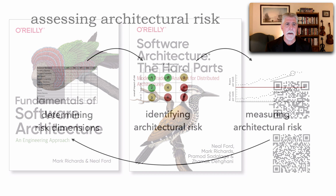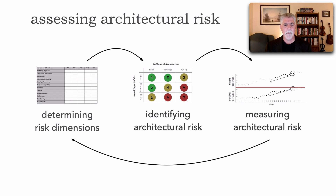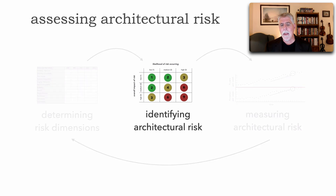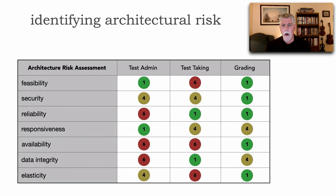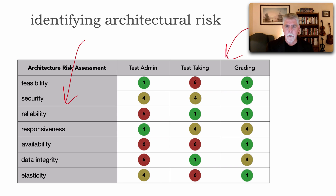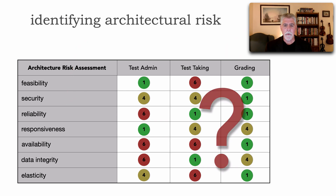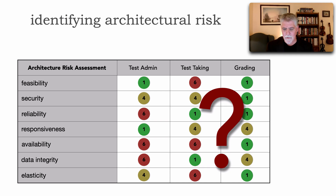In Lesson 127, we took a look at Assessing Architectural Risk and specifically determining those risk dimensions. In this lesson, we're going to complete that assessment by taking a look at Identifying Architectural Risk. We stopped the prior lesson with this view here — we determined all of our context as well as our criteria.